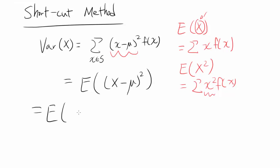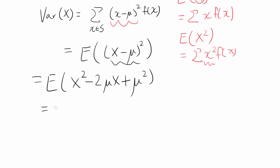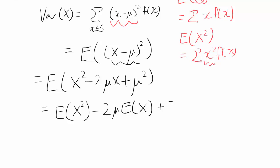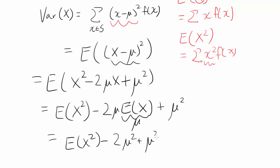Expanding E[(x minus mu) squared], we get E[x squared minus 2mu·x plus mu squared]. Since expected value is a summation, we can break this apart: E[x²] minus 2mu times E[x] plus E[mu²]. Since mu squared is a constant, its expected value is just mu squared. And since E[x] equals mu by definition, we get E[x²] minus 2mu² plus mu², which simplifies to E[x²] minus mu². That's the shortcut.